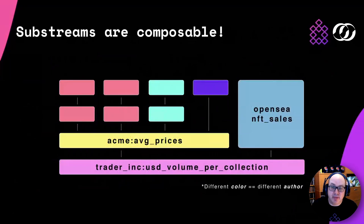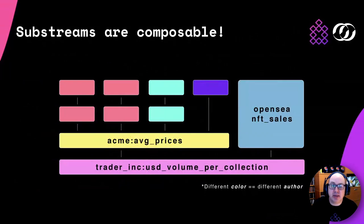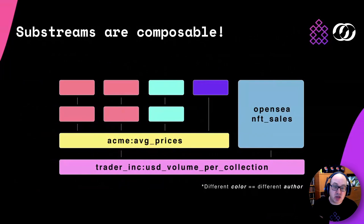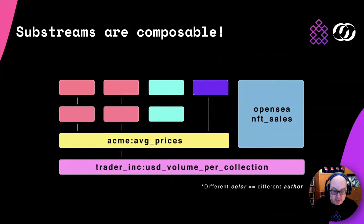Here's a quick example of how Substreams are composable. If I built the base substream in pink, you could come along and build the yellow one on top, and then somebody else could build the light blue or purple one on top of that. There will be a registry where all these Substreams will be published — it doesn't exist yet, it's in the process of being developed. You'll be able to find existing Substreams, use the ones you want, build on top of them, or find one that already does exactly what you need so you don't have to write anything. This library of composable Substreams is coming very soon.